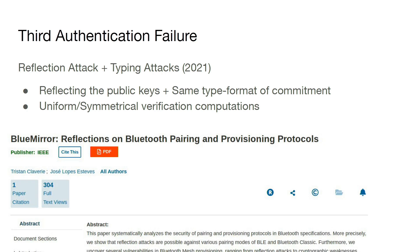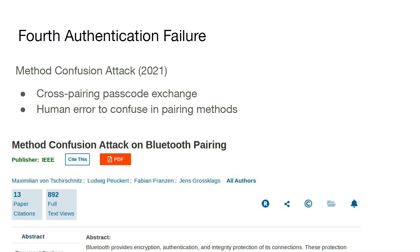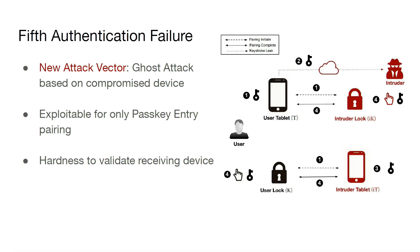Our third authentication failure results in a reflection and typing attack, which exploits the fact that Bluetooth passkey entry has uniform and symmetrical verification computations. We also get our targeted method confusion attack, and we go one step further by allowing compromised device functionality into our model. Here, one of the user's devices has a malicious application, and if the user is using passkey entry, the adversary can use symmetrical devices at the time of connection initiation to confuse the user into thinking their devices are connecting with each other when they are actually connecting with the intruder's symmetric devices. This exploits the fact that when entering the passkey entry passcode, it is hard for a user to see where the passcodes are going.